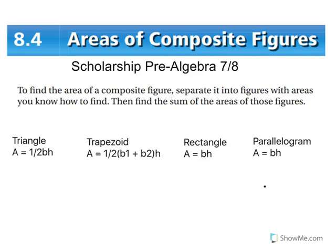Hello everybody. We're looking at Chapter 8.4: Areas of Composite Figures. This is the final installment of the Chapter 8 section on circles. To find the area of a composite figure, you want to separate it into figures with areas you know how to find, then find the sum of the areas of those figures.